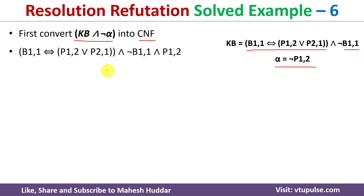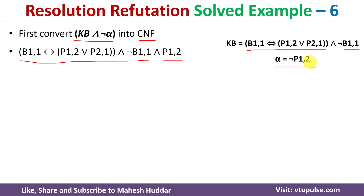This is how the knowledge base and negation of alpha will look. The negation of alpha is P1,2 because alpha is negation of P1,2, and negation of that becomes P1,2. Now we check whether this is in conjunctive normal form.